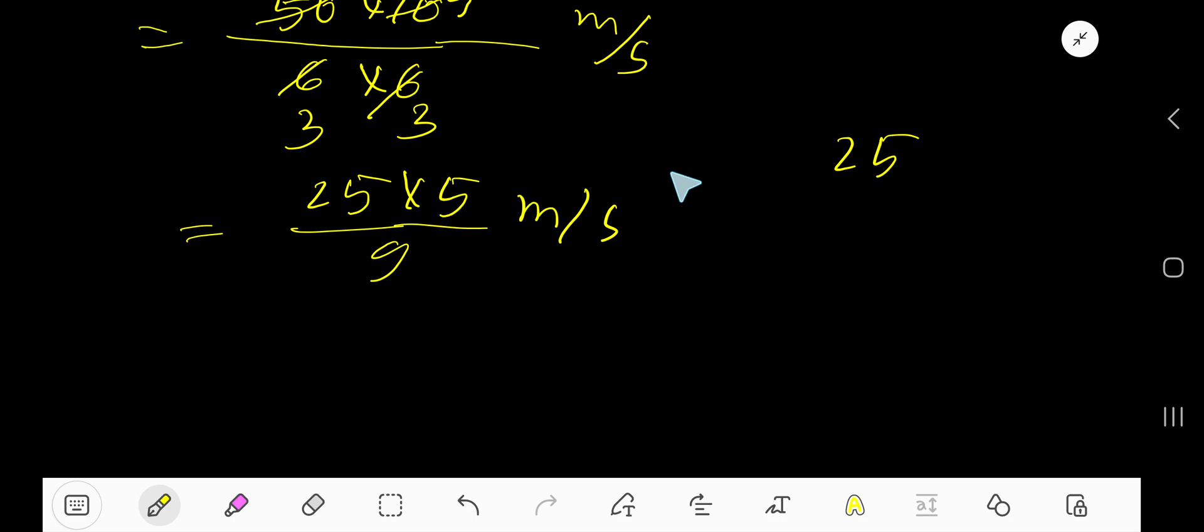Okay, multiply 25 by 5. You are getting 5, 5 times 2 is 10, 10 plus 2 is 12. 125.